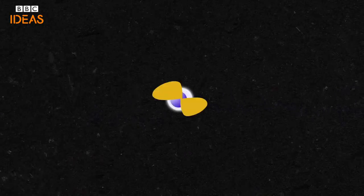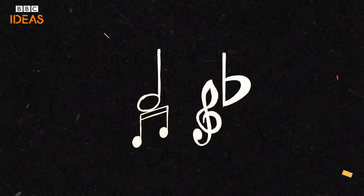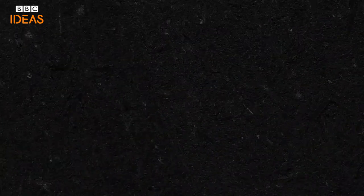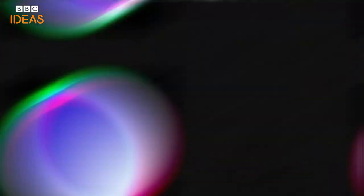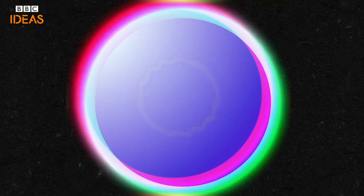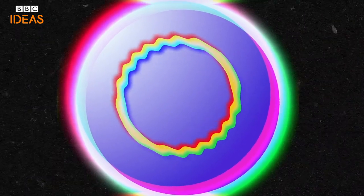So what does string theory predict we would see? We now believe that all these subatomic particles, hundreds of subatomic particles, that we get by smashing protons at the Large Hadron Collider, they're nothing but musical notes, as Pythagoras believed. If I had a supermicroscope and I could peer into an electron, what would I see? I would see a rubber band. A vibrating rubber band.